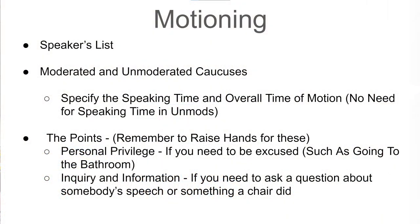Next, you'll need to know how to motion for an event and make points. There are three main things that you are able to motion for, including a speaker's list, moderated caucuses, and unmoderated caucuses. When motioning for things, you need to specify the topic, the speaking time, and the overall time. The only one this does not apply to is unmoderated caucuses.